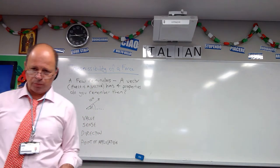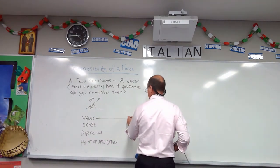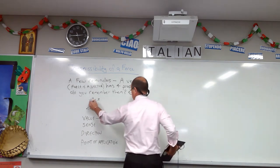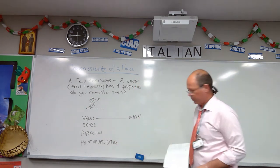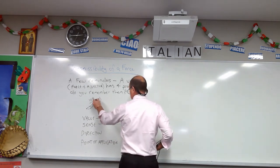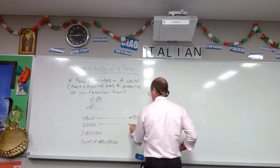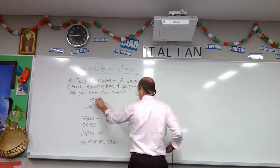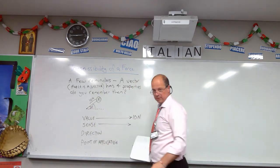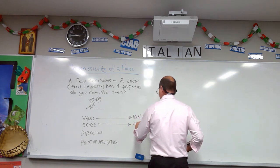What does that all mean? Value — that's the magnitude of the force, so in this case 10 N. Sense — that is the direction of the arrowhead. In this instance the arrowhead is on this side; the arrowhead could be on this side as well, in which case the sense would be opposite. So sense refers to the arrowhead on the vector.